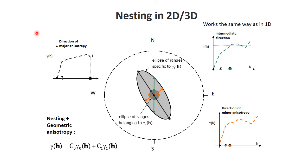As mentioned before, nesting is essentially an addition of two spatial components, which literally translates into adding variograms. In the 1D case I added two 1D variograms, each with their own variance contributions. Now I have to add two-dimensional variograms. As per our previous analysis, a 2D variogram requires the definition of an anisotropy — at minimum, an ellipsoidal variation of the range with direction.